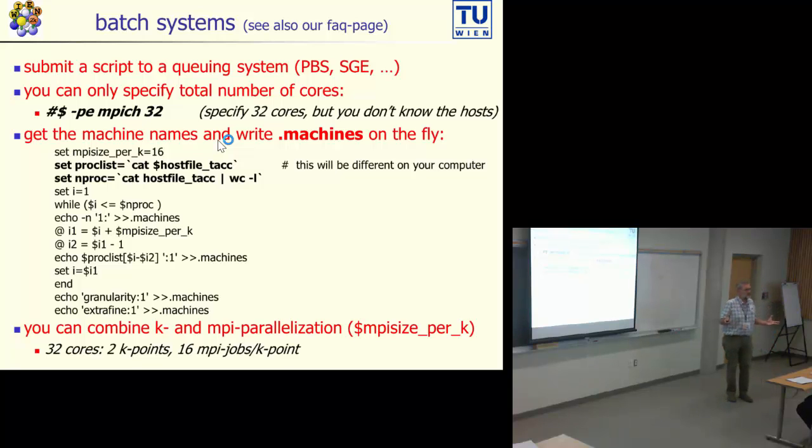If you go to really big machines on a computing center, you cannot run the way we are running here or on your local computer, but you have to use a batch system. That means you can only submit a job, a script which you write, to a queuing system, and this job will run at some time, whatever the system lets you run. Such queuing systems are called PBS or SGE or there are many others. It's not a Unix thing. You have to find out what queuing system you actually have and you submit a script to this queuing system. This script you have to write yourself.